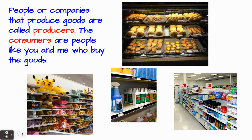People or companies that produce goods are called producers, and consumers are people like you and me who buy the goods. So there's a bakery — the producers are the bakers — and all these store shelves have products made by producers. And when we go shopping, we are the consumers.